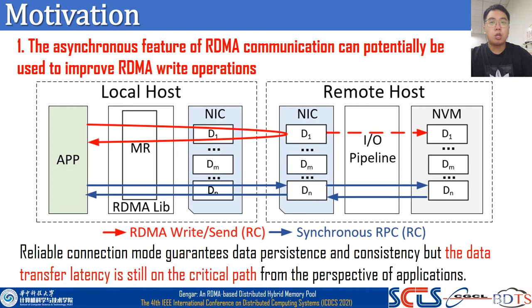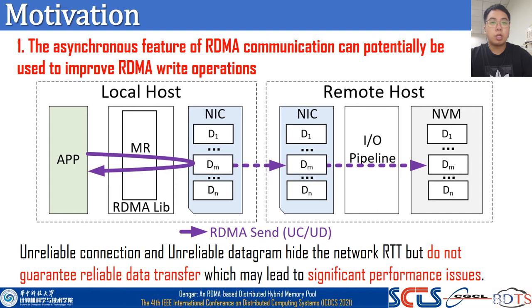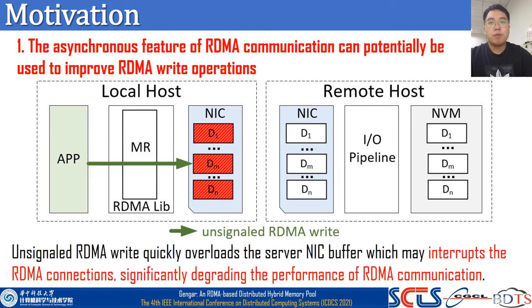Here is our first motivation. The asynchronous feature of RDMA communication can potentially be used to improve RDMA write operations. Reliable connection guarantees data persistency and consistency, but the data transfer latency is still on the critical path. Some prior works choose to forgo the reliable connection to achieve high throughput of RDMA operations. Unreliable connection and unreliable datagram hide the network RTT by retaining locally. However, UC and UD do not guarantee reliable data transfer in heavily loaded DSM systems and may lead to significant performance issues. Un-signaled RDMA write does not need to wait for the work completion event, but it could quickly fill the QP and overload the server's receive buffer, since it can keep sending work requests without being blocked.